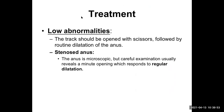What is the treatment? For low abnormality, the tract should be opened with scissors, followed by routine dilatation of the anus — it is as easy as that. In case of stenosed anus, the opening is there but very small or narrow, so you can make it wider by regular dilatation. This is not a big type of problem.